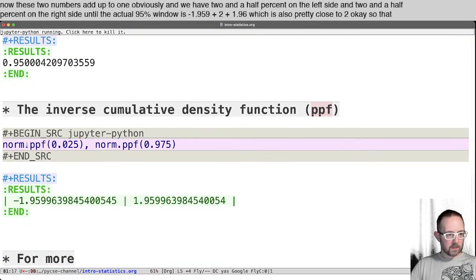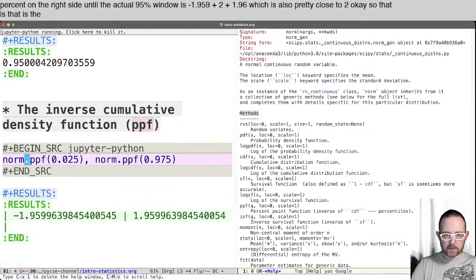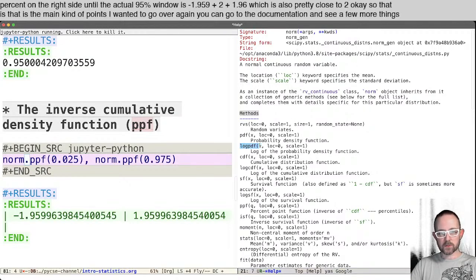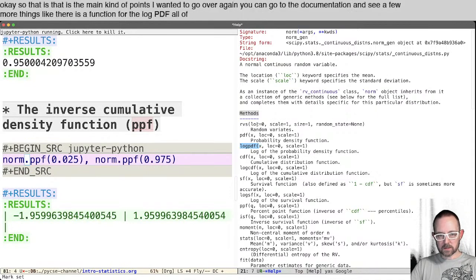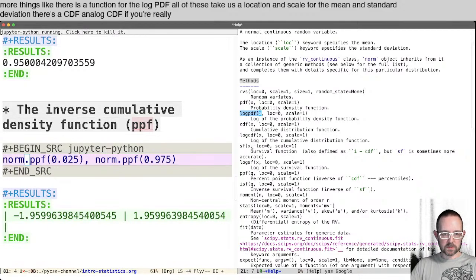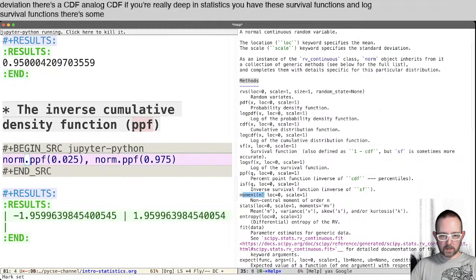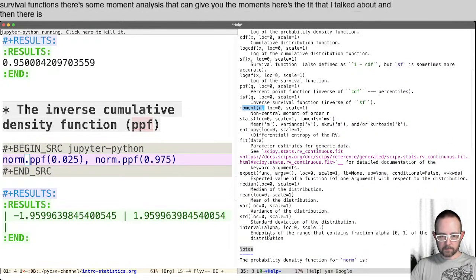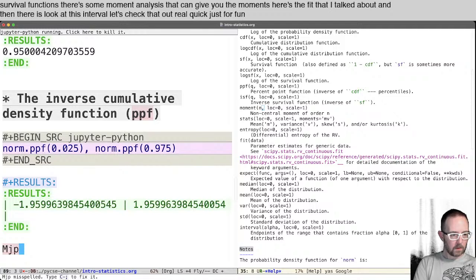Okay, so that is the main kind of points I wanted to go over. Again, you can go to the documentation and see a few more things, like there is a function for the log PDF. All of these take a location and scale for the mean and the standard deviation. There's a CDF and a log CDF. If you're really deep in statistics, you have these survival functions and log survival functions. There's some moment analysis that can give you the moments. Here's the fit that I talked about. And then there's, oh, look at this interval. Let's check that out real quick, just for fun.